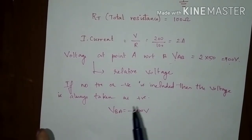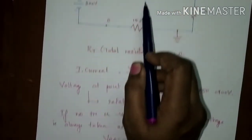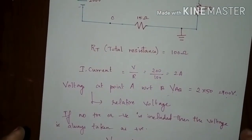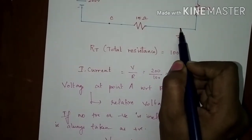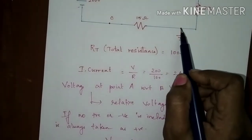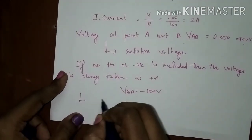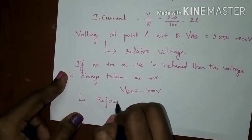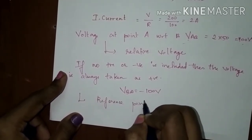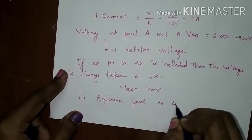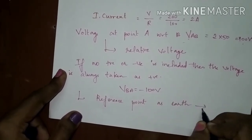If the voltage V is found with respect to A, then VBA is minus 100 volts. If the reference point is changed to the earth point, then any voltage taken with respect to earth is known as absolute potential. While taking the reference point as earth, any voltage is termed as an absolute voltage.